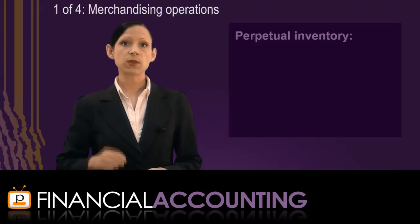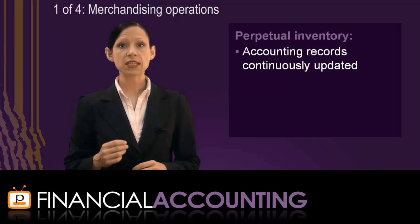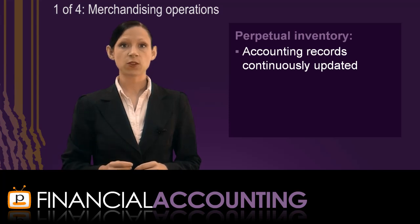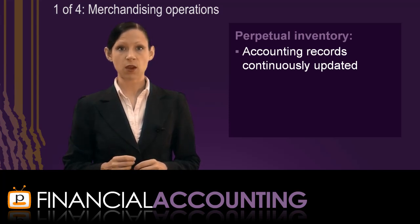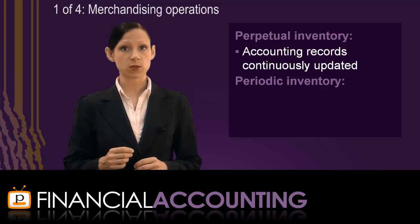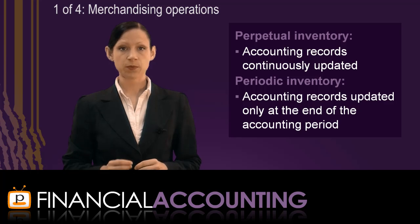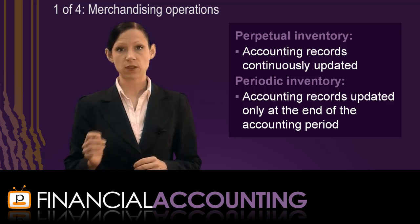There are two ways we can record the purchase and sale of merchandise. Under the perpetual inventory system, the accounting records are continuously updated to reflect the value of inventory available for sale and cost of goods sold as each transaction occurs. The alternative is the periodic inventory system, where these values are updated only at the end of the accounting period. We're going to focus on recording transactions under the perpetual inventory system.